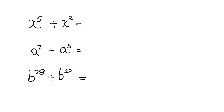We're going to be continuing with our rules of exponents and today we're dealing with division. Rules of exponents are always very easy as long as you know what exponents mean — you can figure out the rules of exponents. Let's have a look at an example. If you've got x to the 5 divided by x squared, I'm going to first write that as a fraction because it will make it easier. So x to the 5 divided by x squared can be written like that.